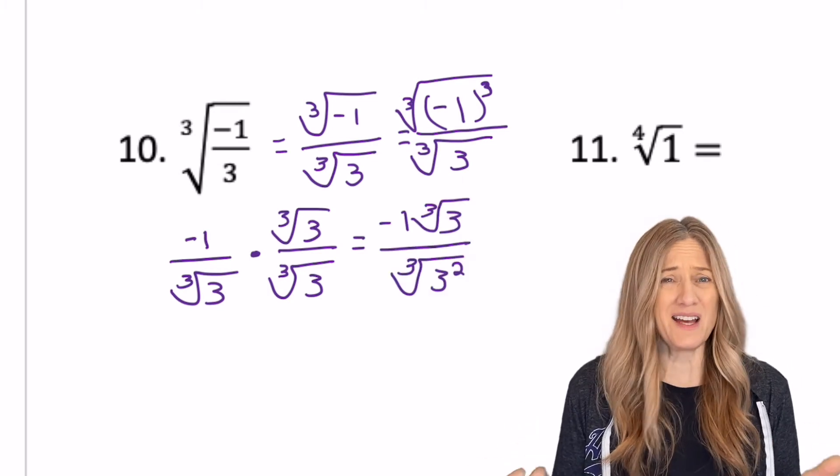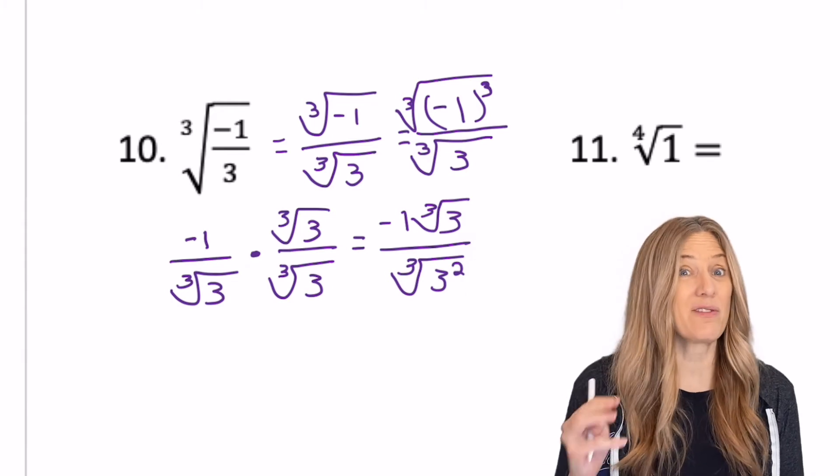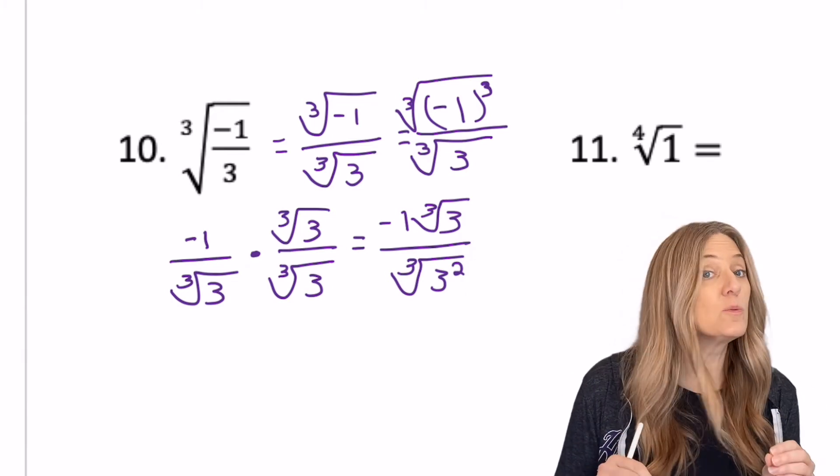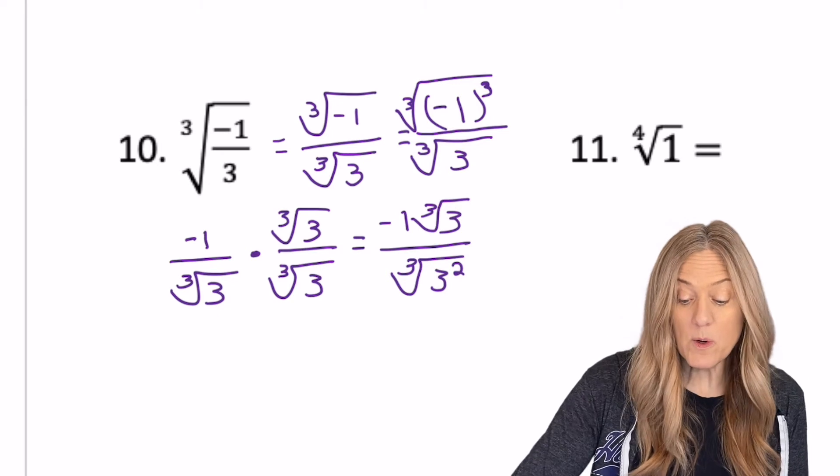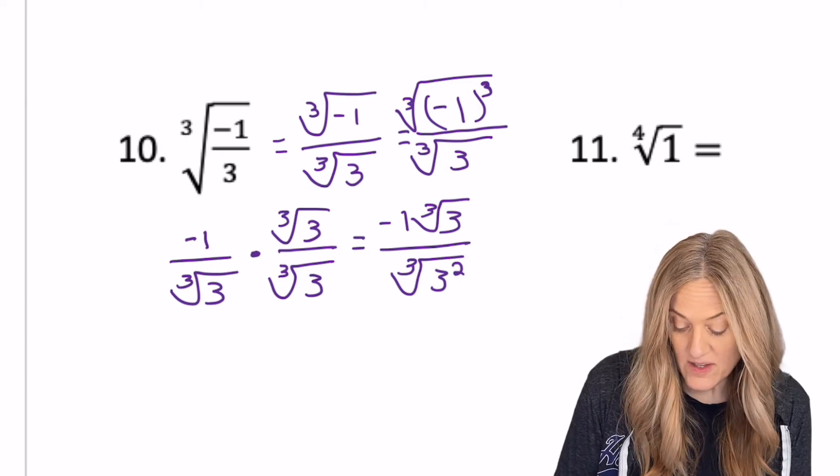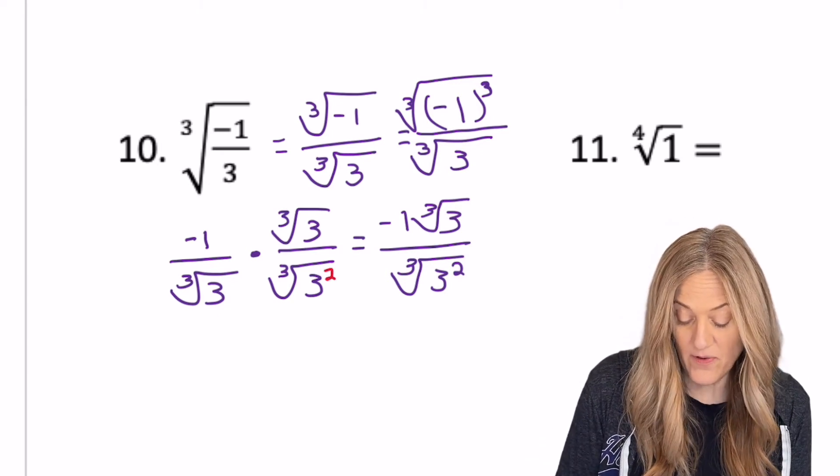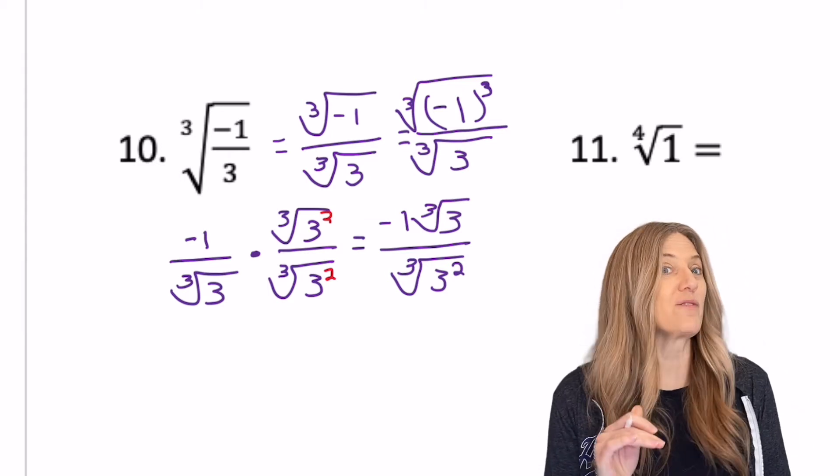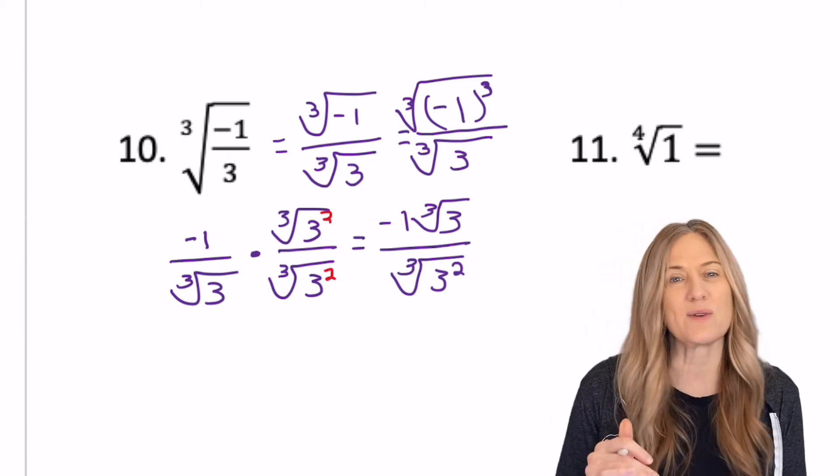Cube root of three squared doesn't help me. I actually need to have three threes to clear that cube root in the denominator. So what we want to do is make sure that these will match eventually. So if I multiply by the cube root of three squared over the cube root of three squared,